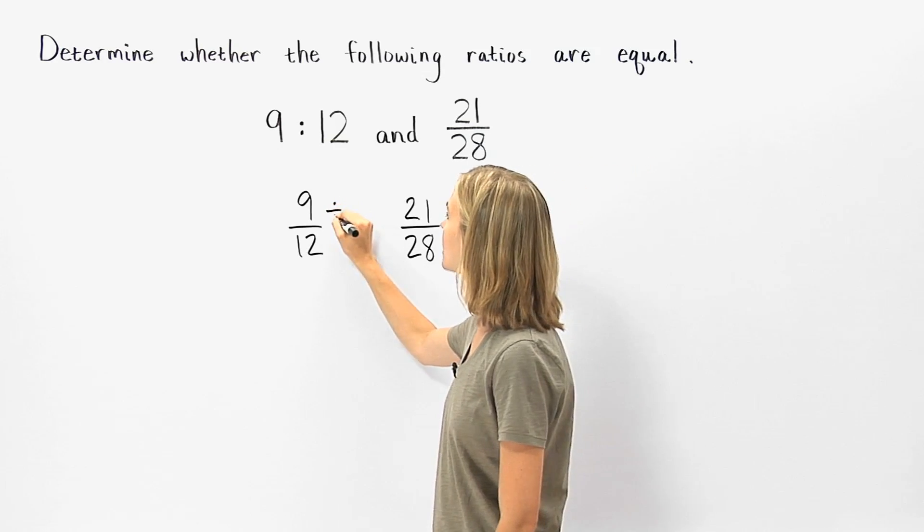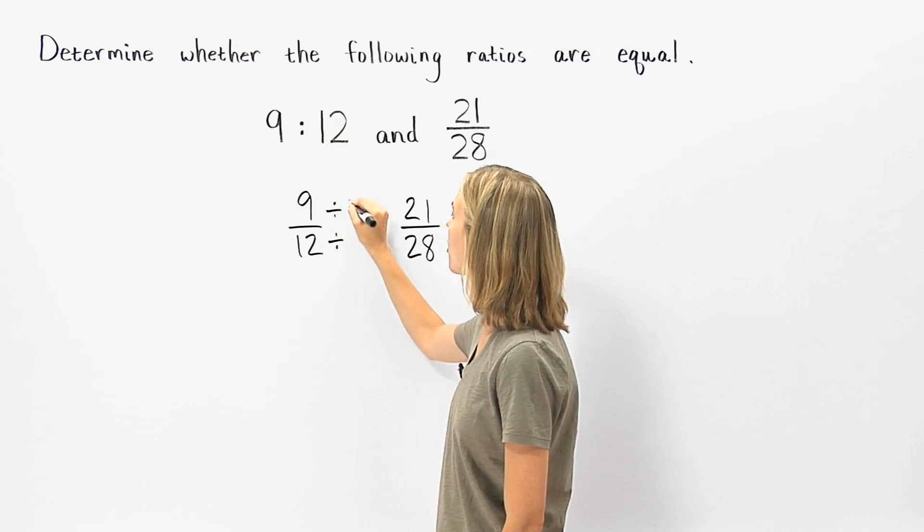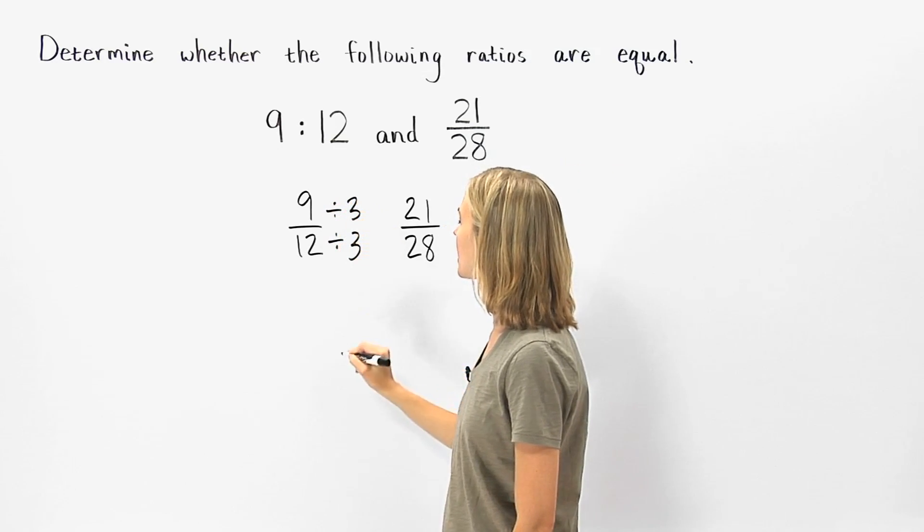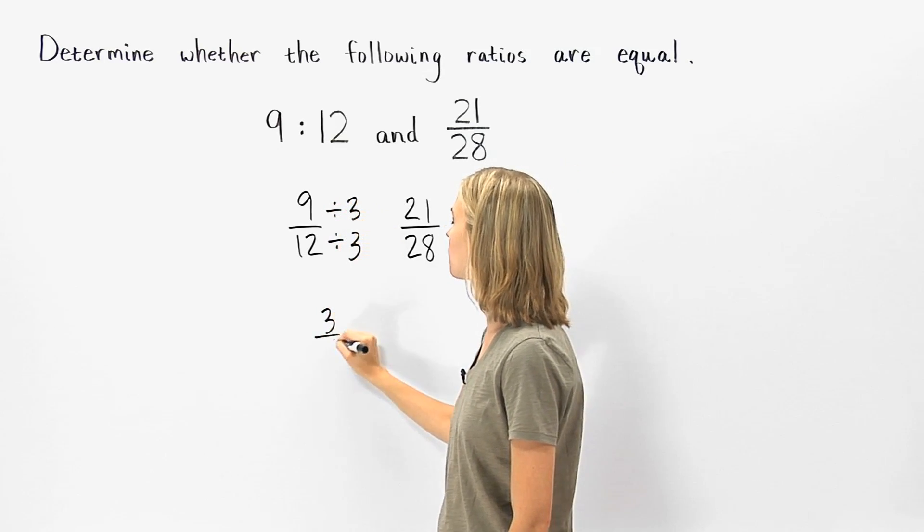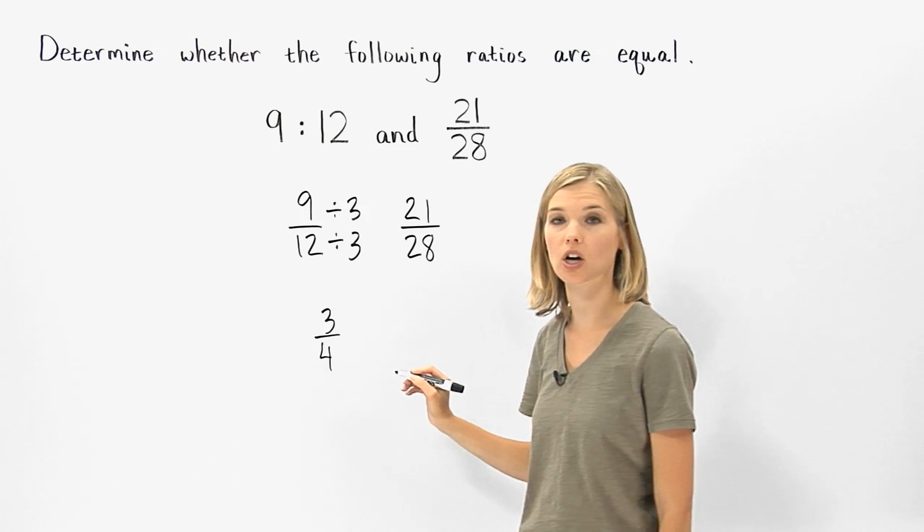So dividing the numerator and denominator of 9 over 12 by 3, we get the equivalent fraction 3 fourths, which is in lowest terms.